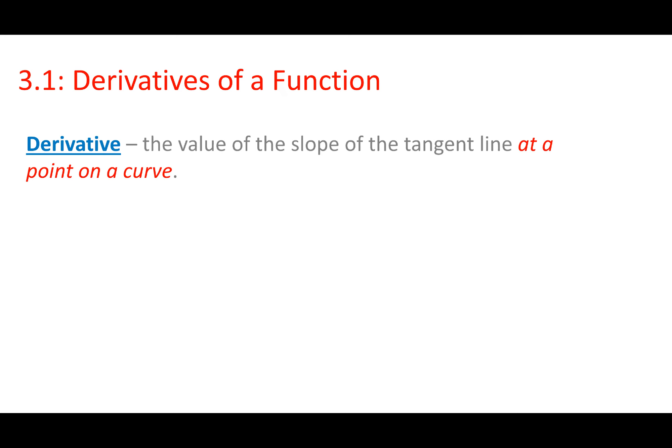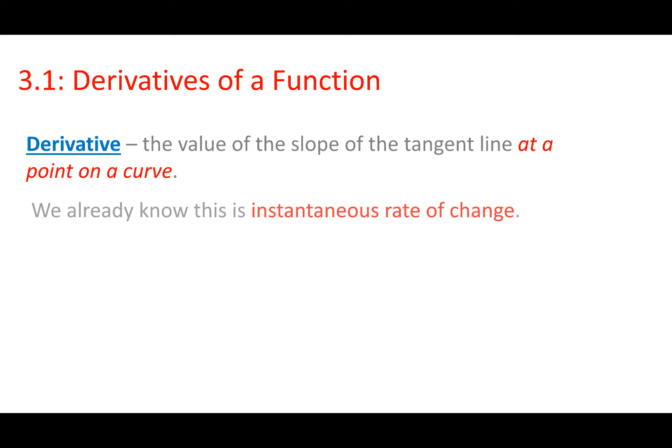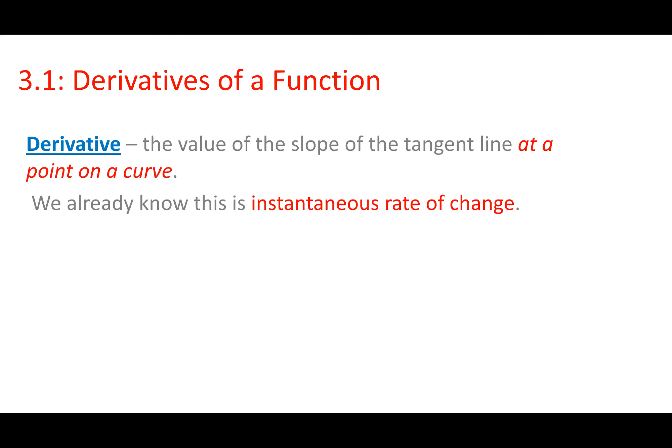So what is a derivative? A derivative is simply the value of the slope of the tangent line at a point on a curve, because you can't find the slope of a curve — you can only find the slope of a tangent line at a specific point. We already know this is called the instantaneous rate of change. So a derivative is the instantaneous rate of change.